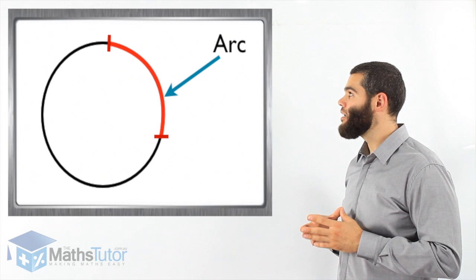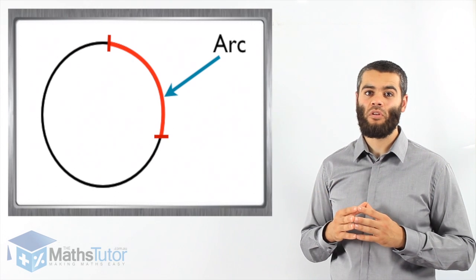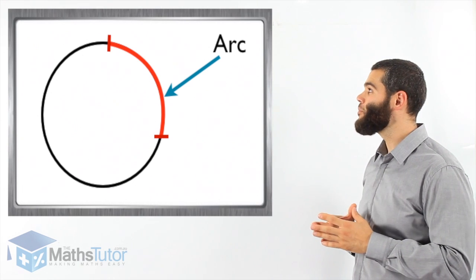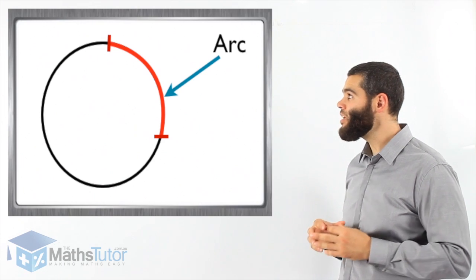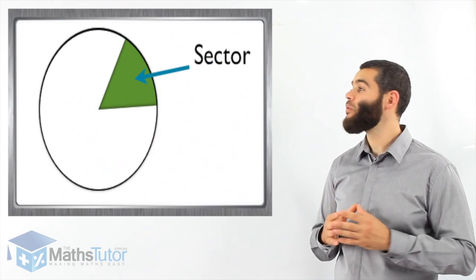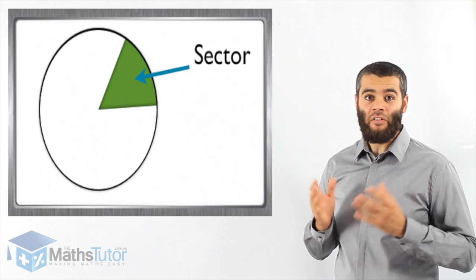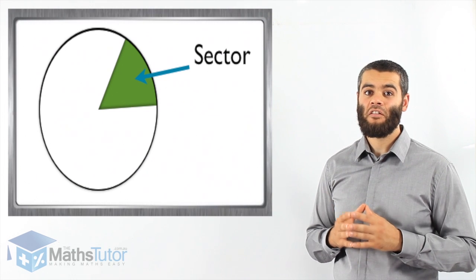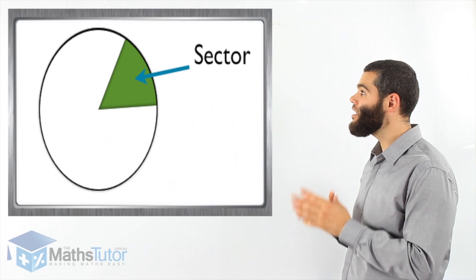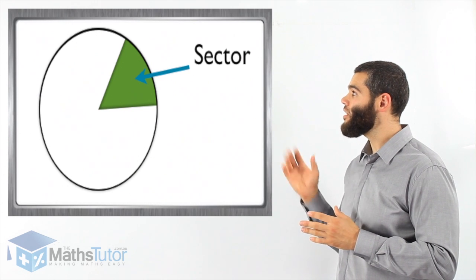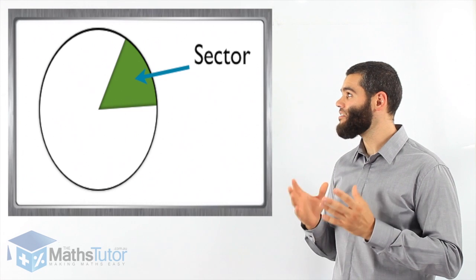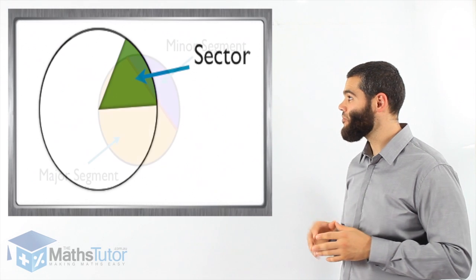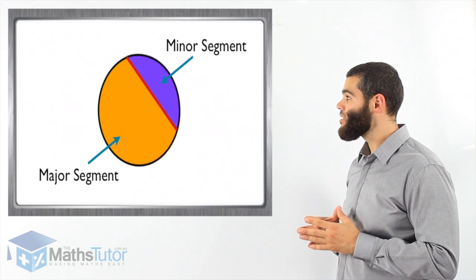Then we have an arc. An arc is part of a circle — a portion of the circle, but not the total circle, as you can see marked in red. And now we have what we call the sector. The sector is like a pizza slice, so it's very important to know that a sector looks like a pizza slice — there it is marked in green.